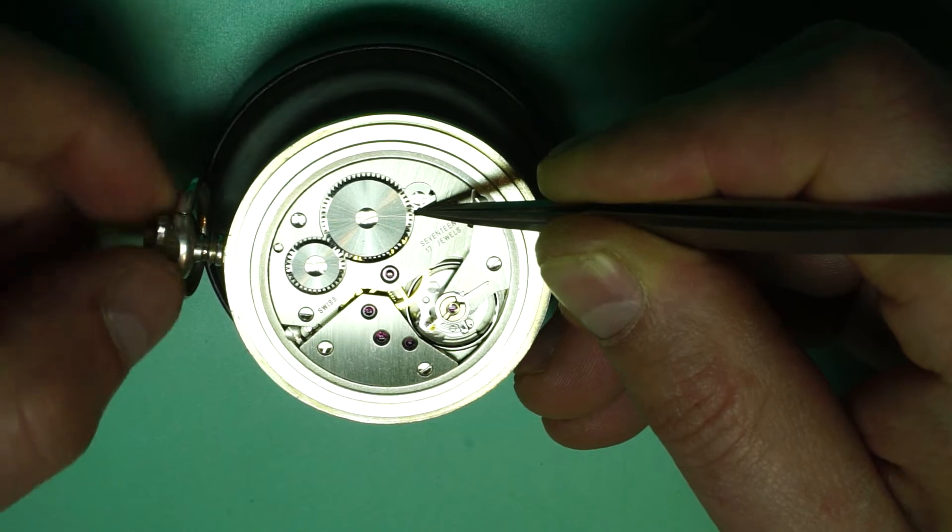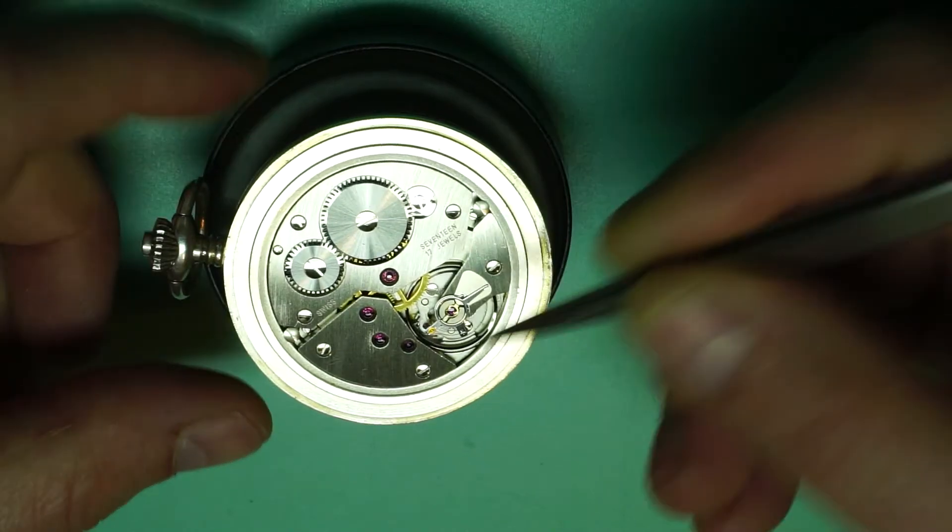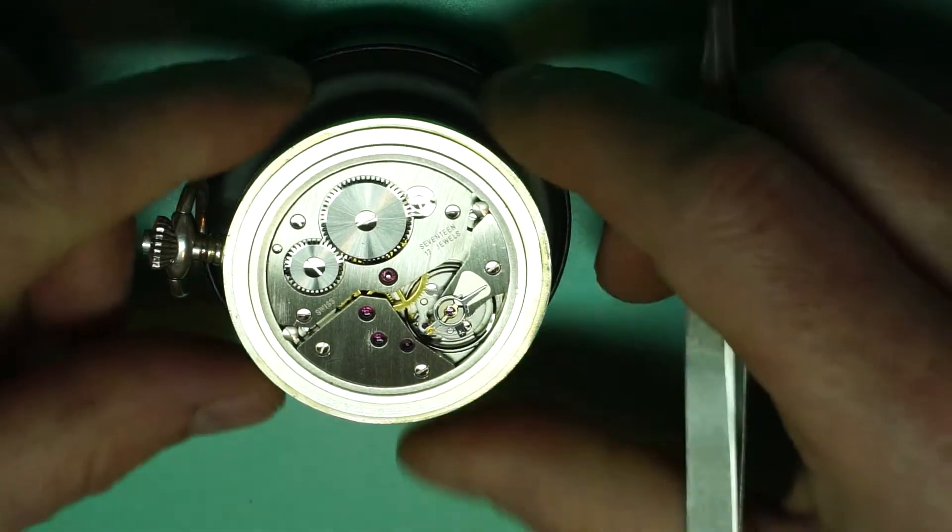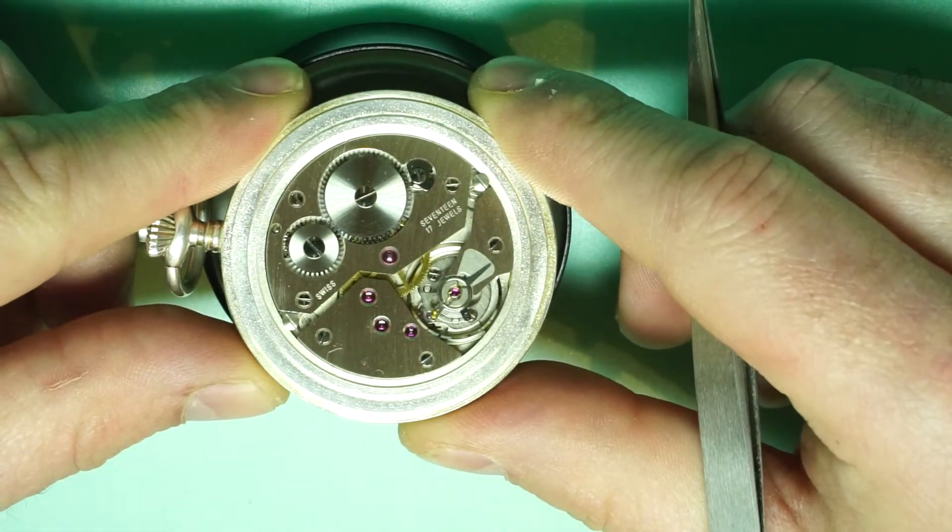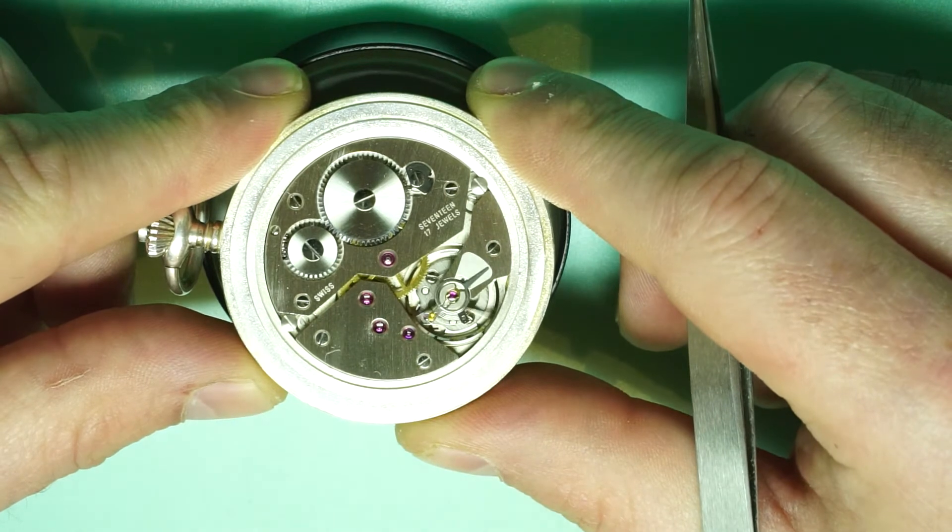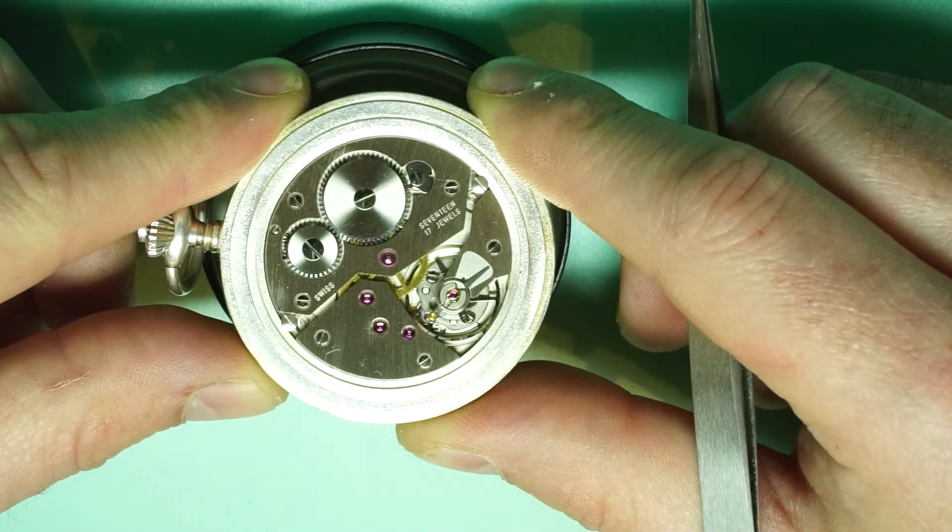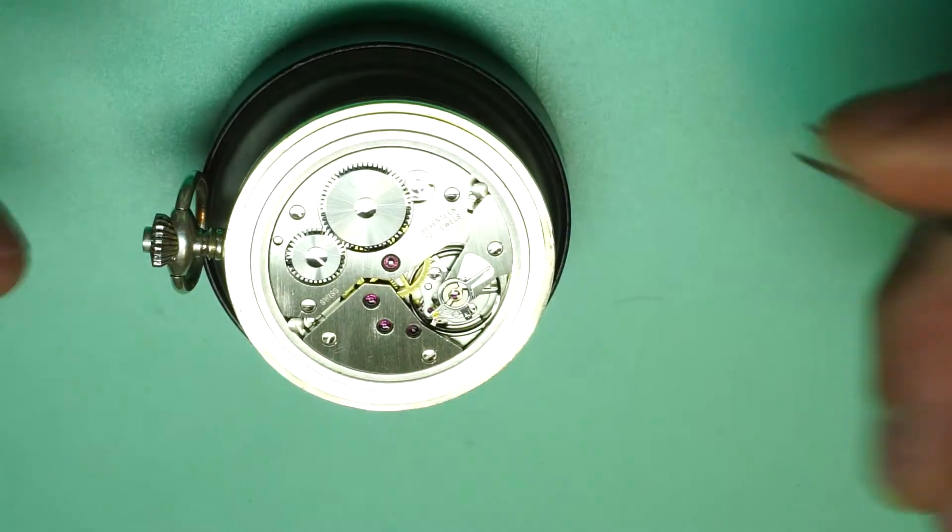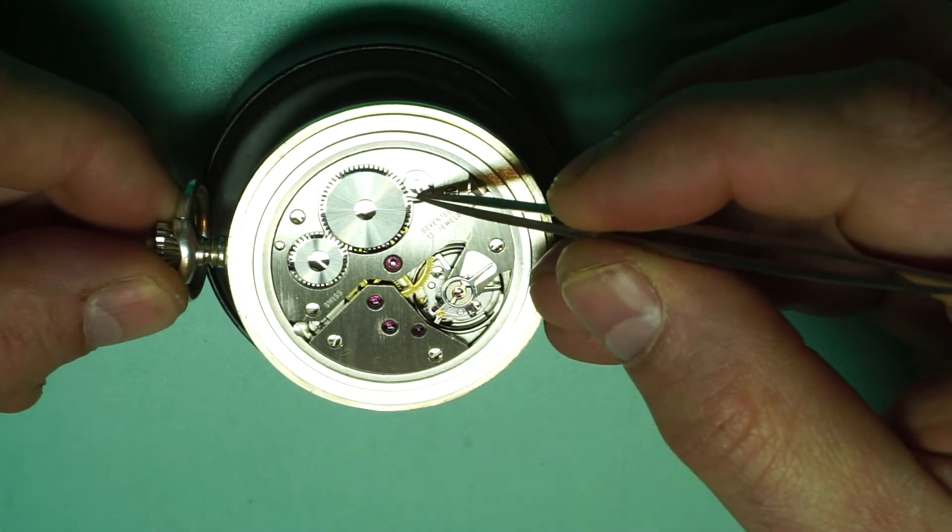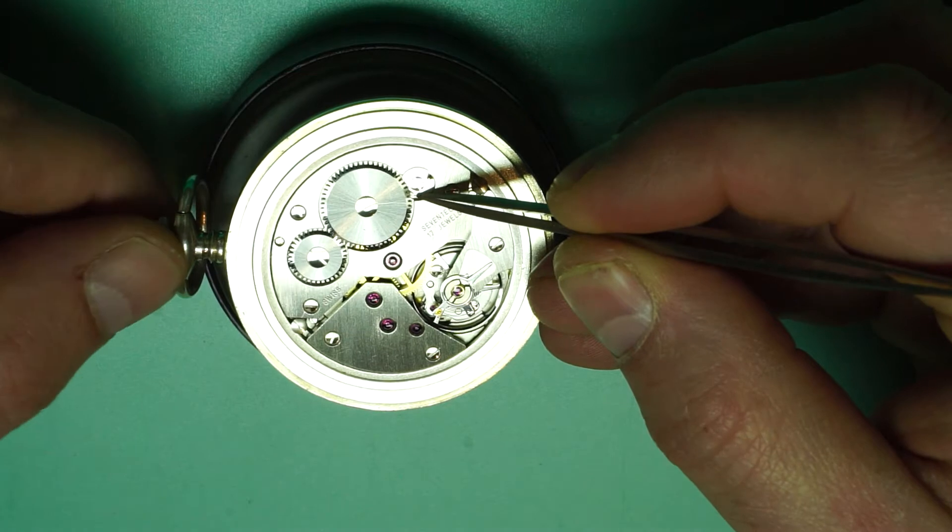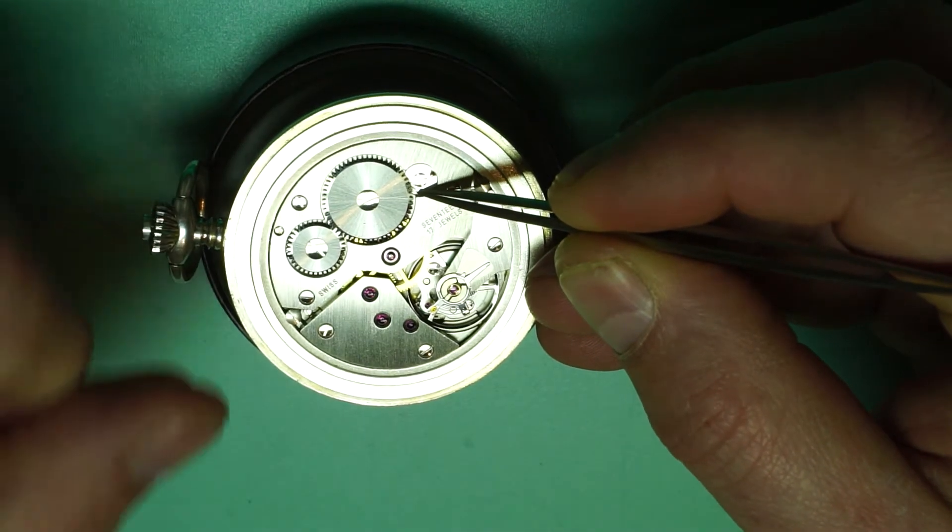So as you can see the mainspring is fully let down, we should see the balance start to slow down and eventually it will stop when there's no more power left in the movement. So there we go the balance has now stopped and we can now safely assume that all the power has gone from the watch. You can always double check by putting a click back out into position.